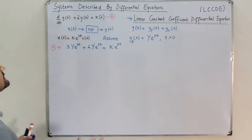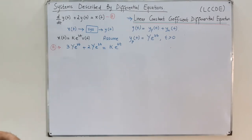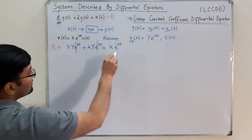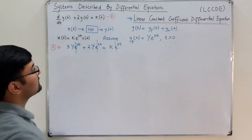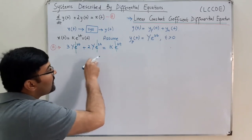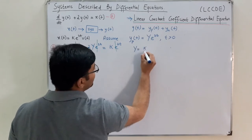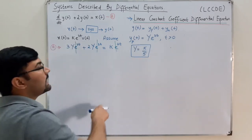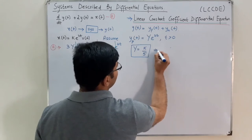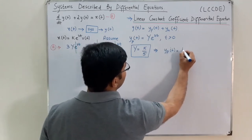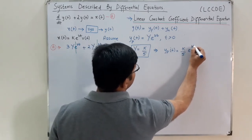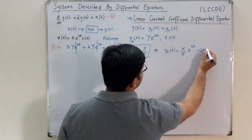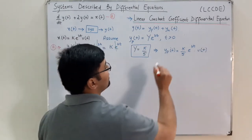For t less than 0, the input is 0 and the output is 0. The exponential e^(3t) cancels out, and this implies that 5Y = k, so capital Y = k/5. Therefore my particular solution is y_p(t) = (k/5)·e^(3t), for t greater than 0, which I write with u(t). I have found the particular solution to the equation.